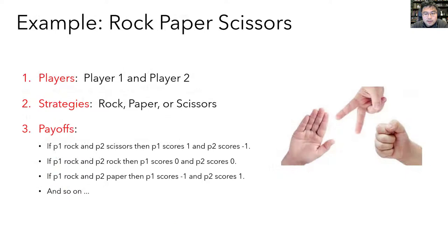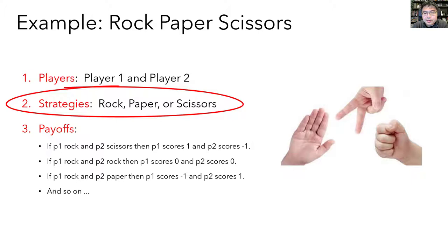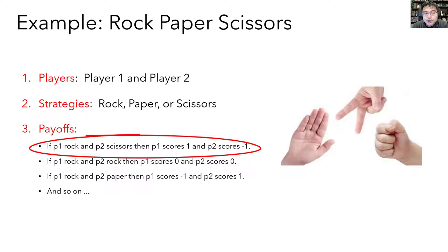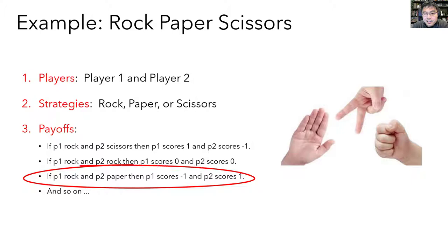Let's give our first example: rock, paper, scissors. In game theory terms, we have two players — player 1 and player 2. Their strategies are rock, paper, or scissors. As for payoffs: if player 1 chooses rock and player 2 chooses scissors, then player 1 scores 1 and player 2 scores minus 1. If both choose rock, both score 0. If player 1 chooses rock and player 2 chooses paper, then player 1 scores minus 1 and player 2 scores 1 — and so on for all combinations.